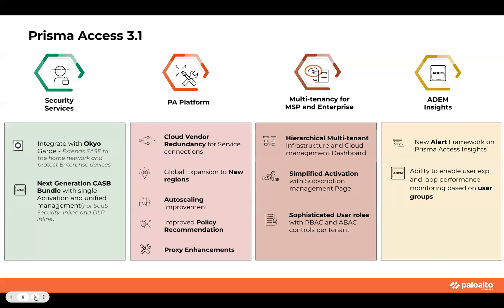The next pillar is Prisma Access as a platform. Here, there are a couple of key features we're adding. One is providing cloud vendor redundancy when it comes to service connections, making for a more resilient system. We are also expanding to new regions almost every couple of weeks. We have auto-scaling improvements, improved policy recommendations on cloud management, as well as some enhancements on proxy.